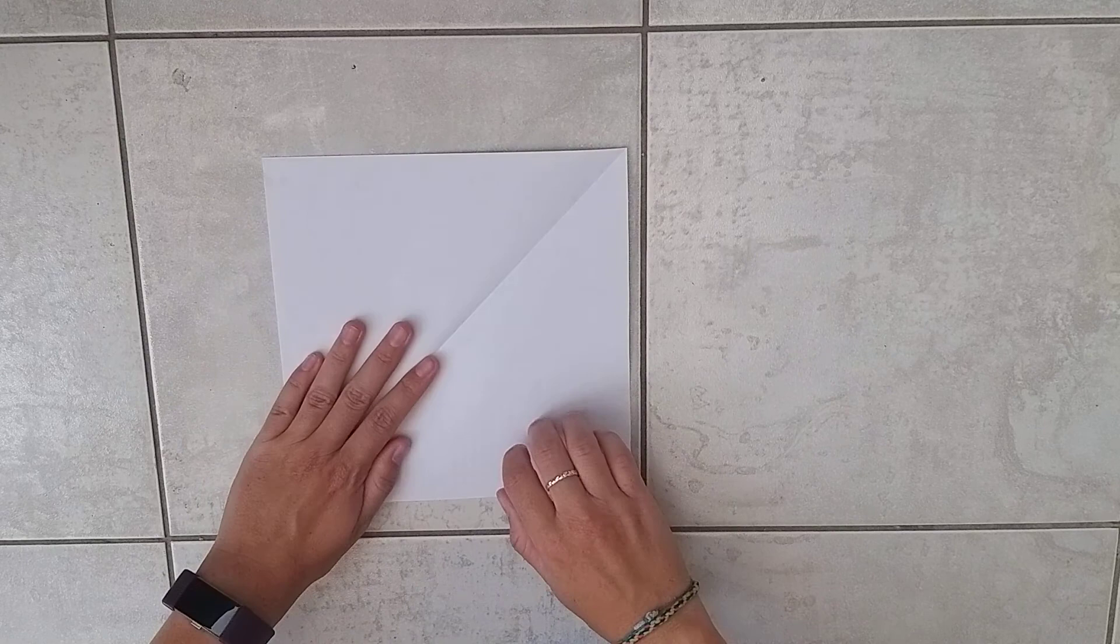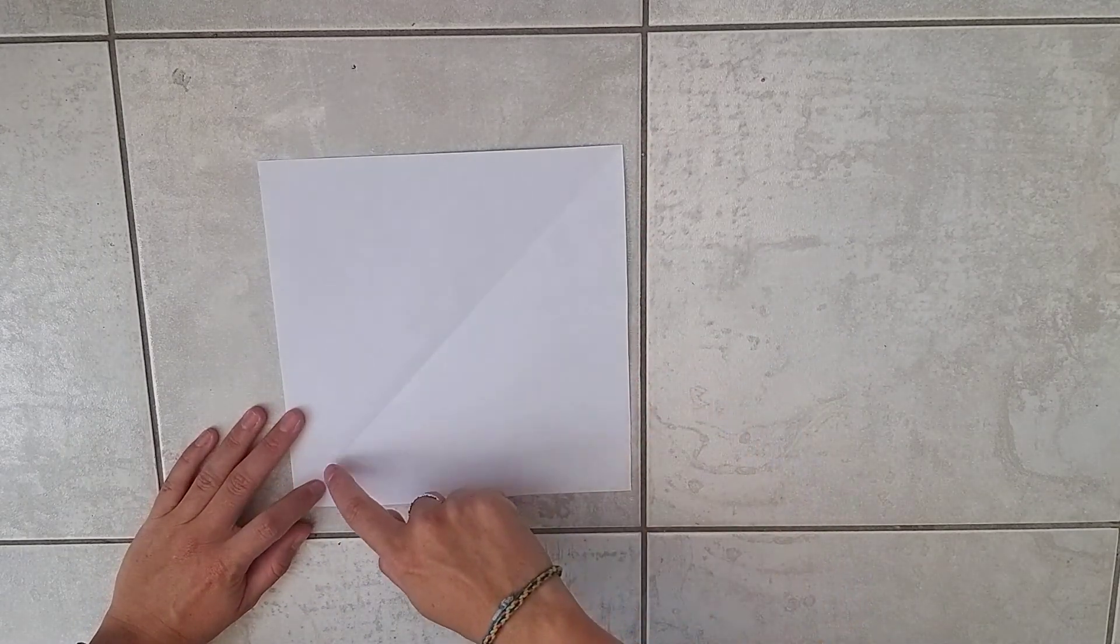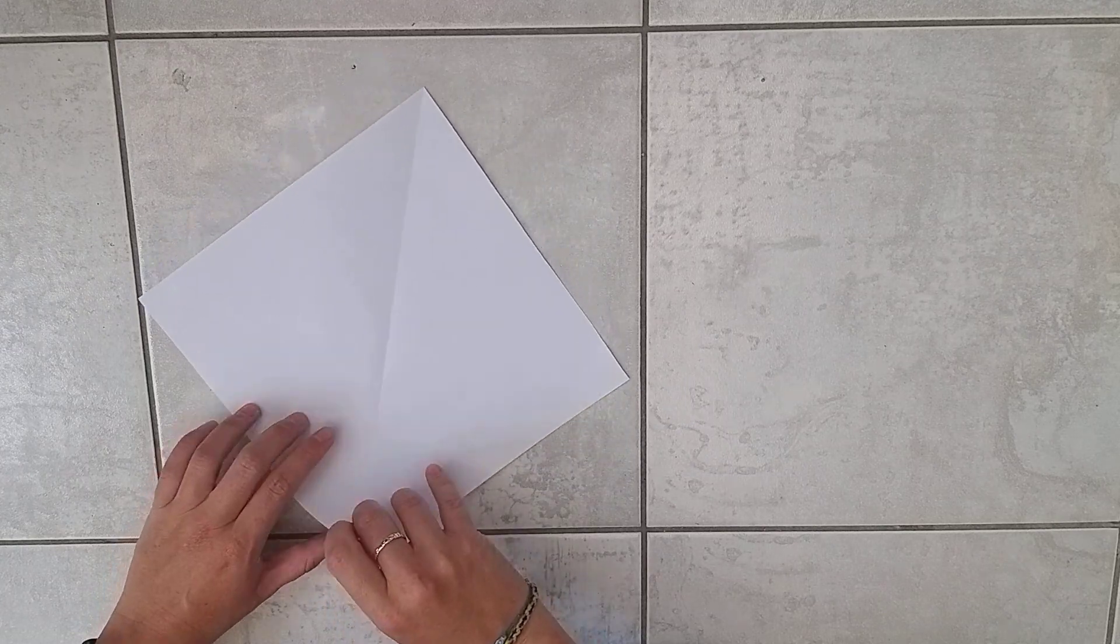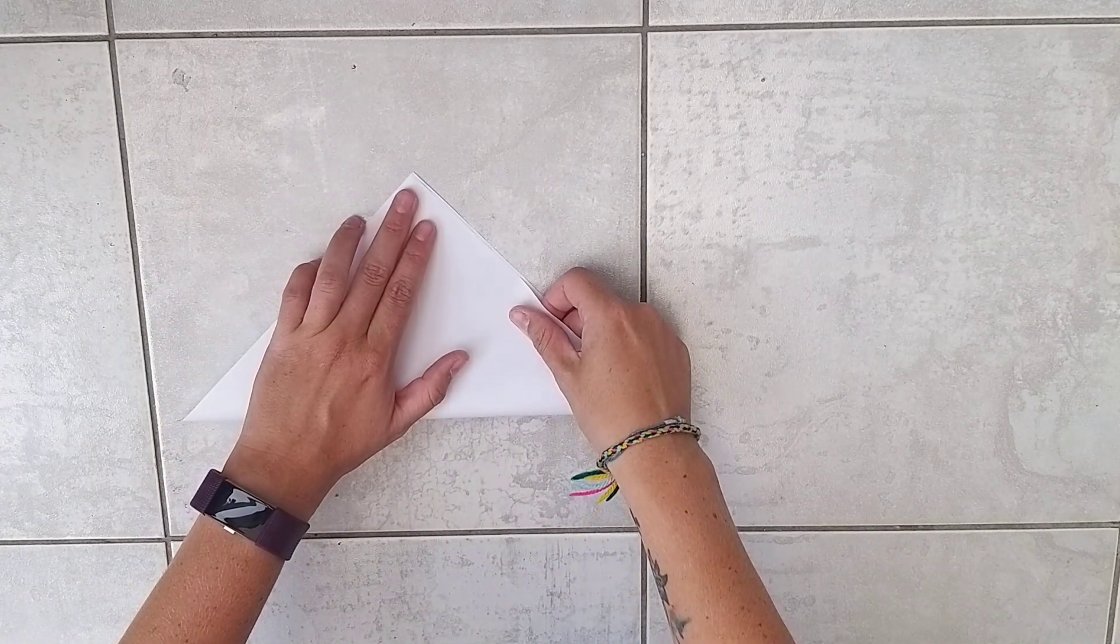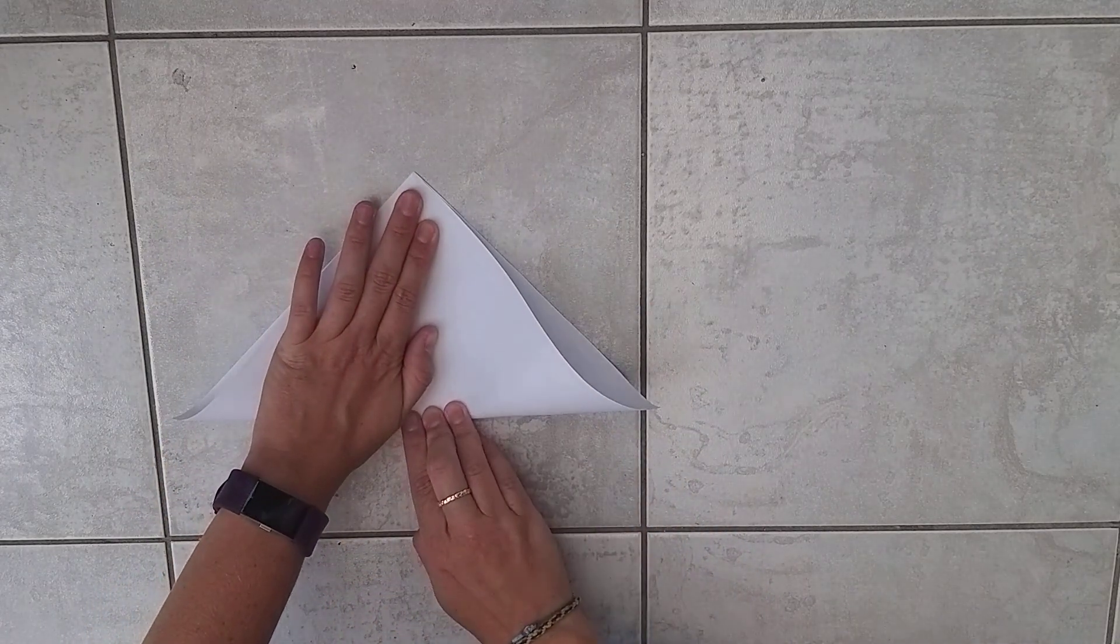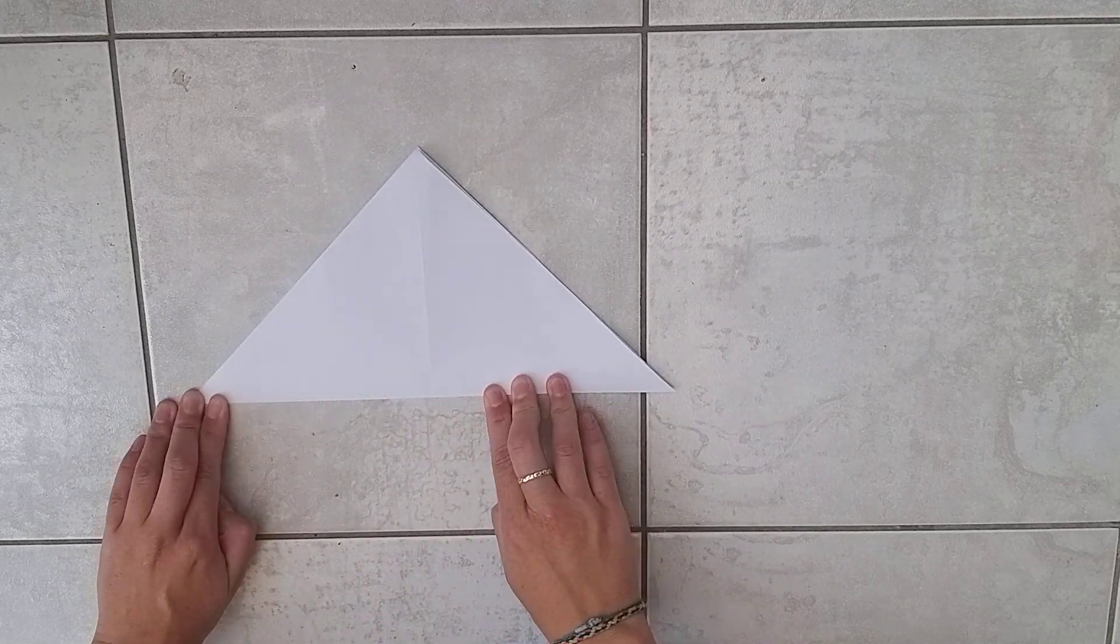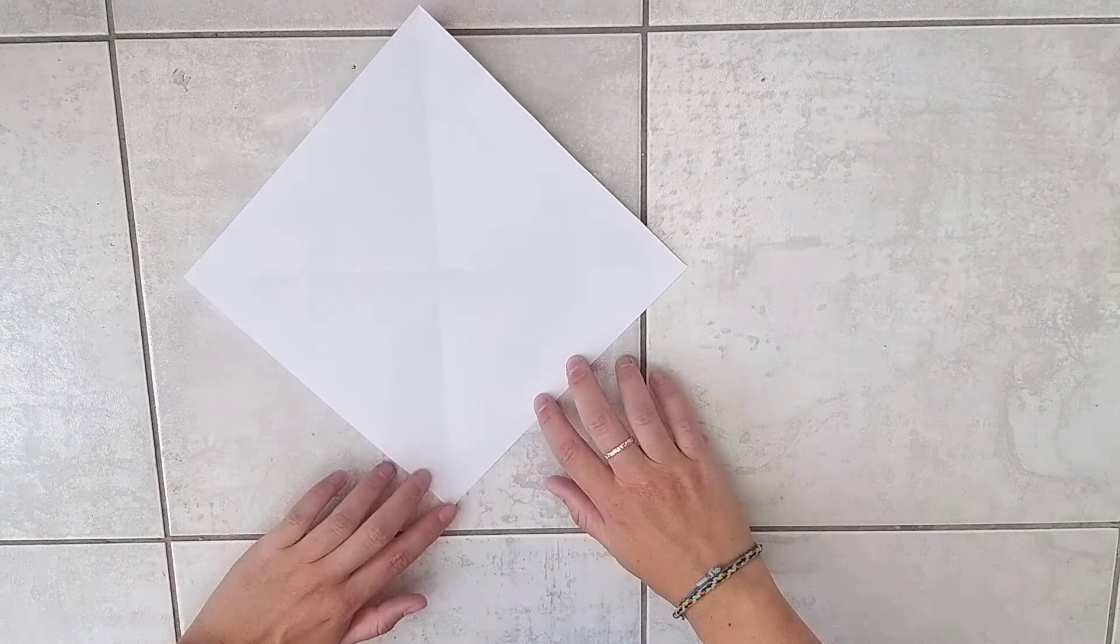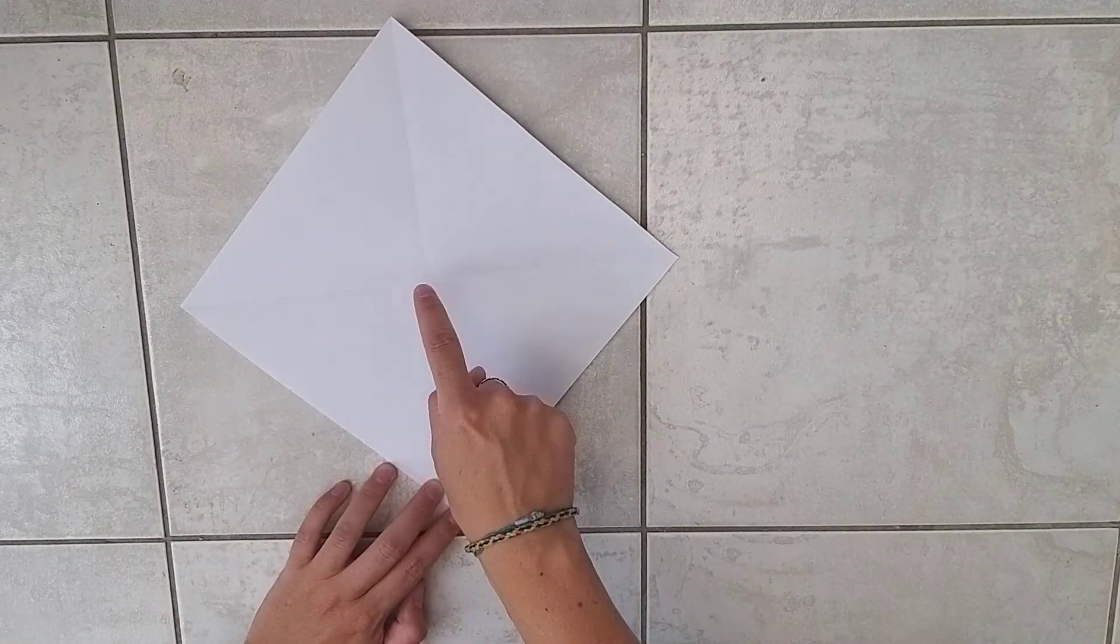Open your square up and then we're just going to fold to make a line this way. You're going to put this corner up to that corner there and fold. Then all we're going to do is open it up and fold each corner into the center.